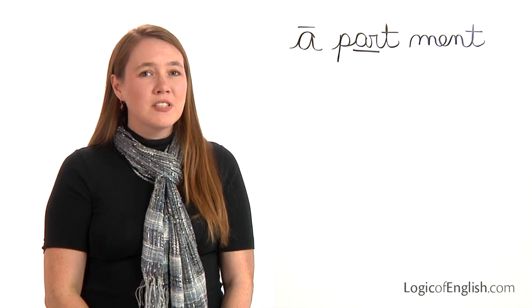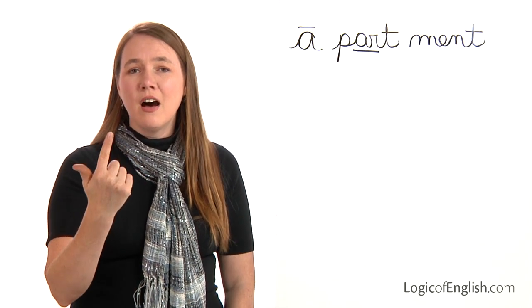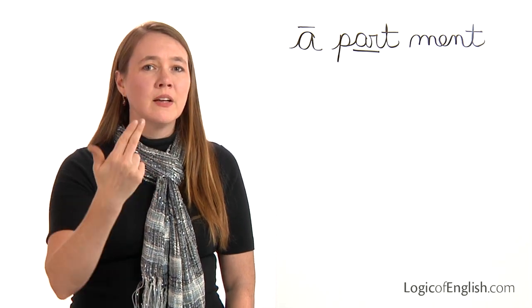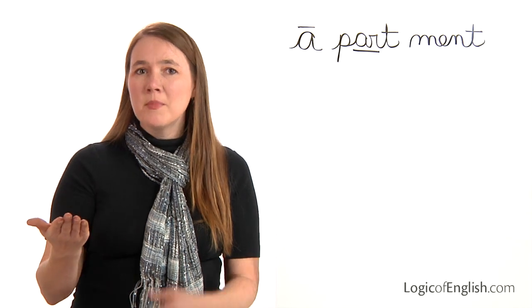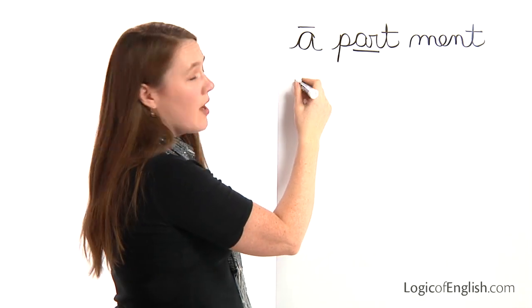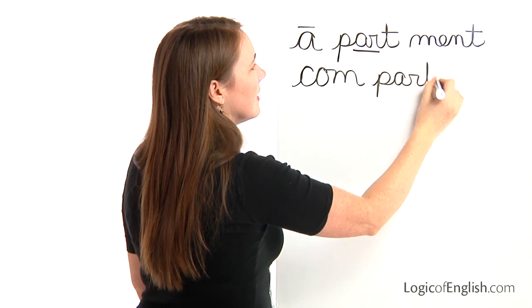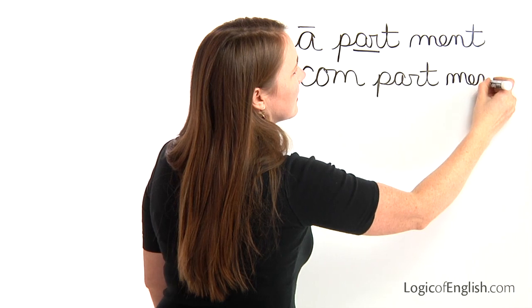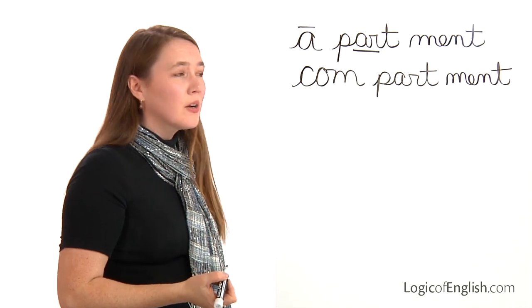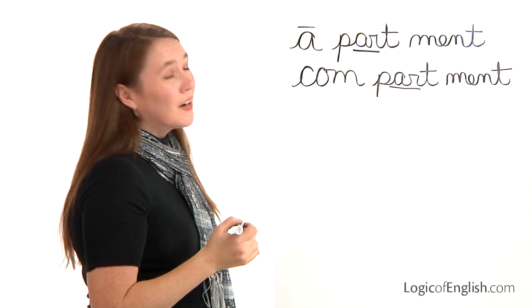The next word is 'compartment.' The box has a compartment for each piece. Three syllables: first is 'com' — C, a, m; second is 'part' — P, r, t; third is 'ment' — M, e, n, t. Help me write it: C, a, m — P, r, t — M, e, n, t. How will we mark compartment? We'll underline the r. Are you starting to see what these words have in common?